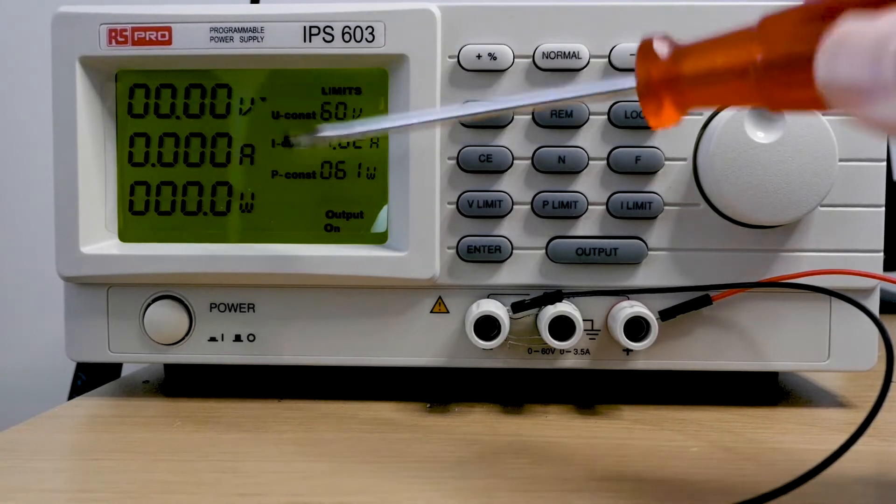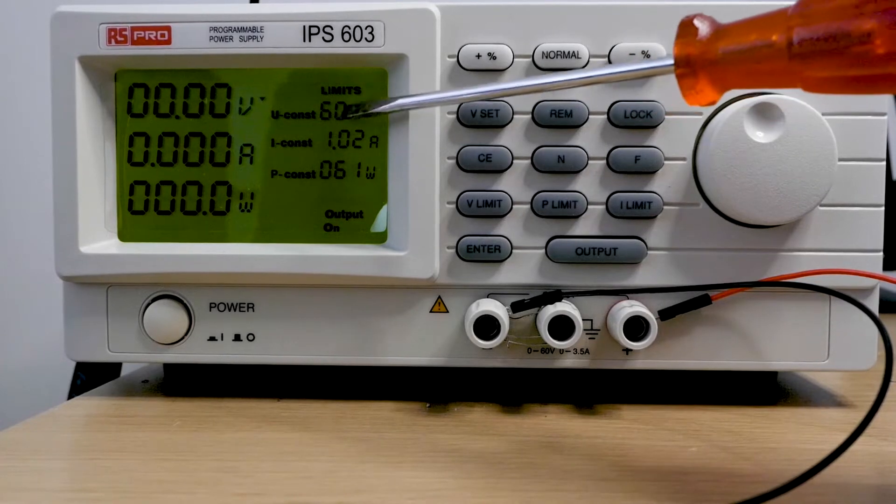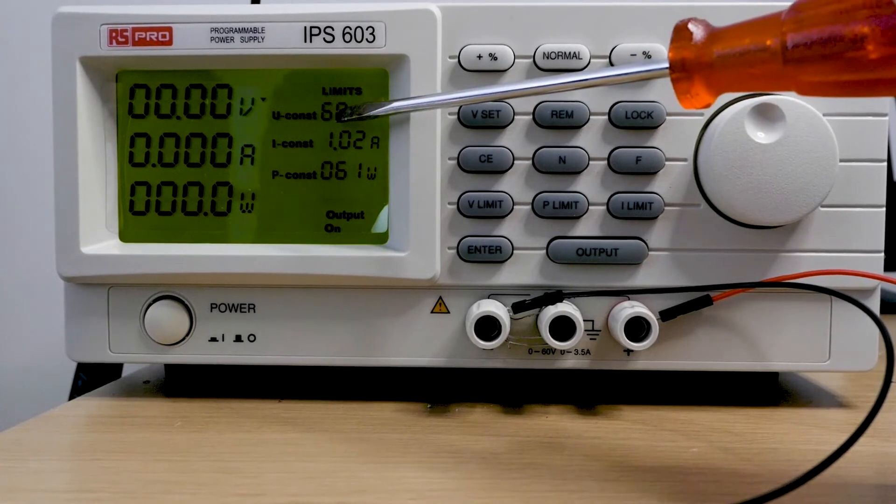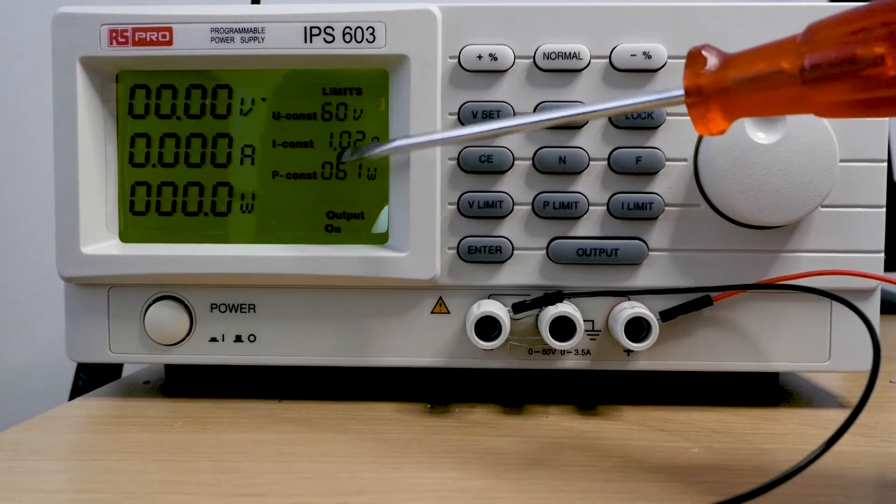The right hand side here has basically got our limits. In this case our limits, the maximum voltage we can achieve is 60 volts. If we look at the current, the maximum I've set the limit to at the moment is one amp.